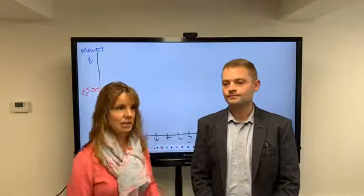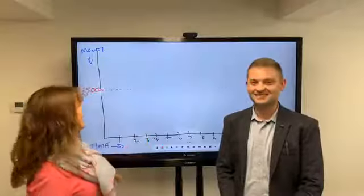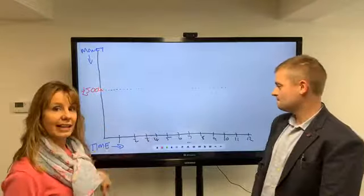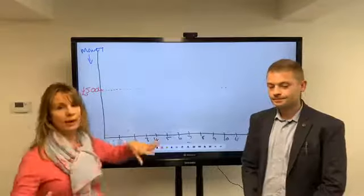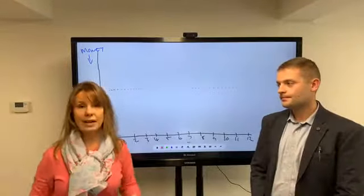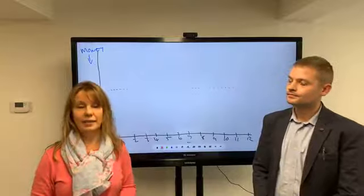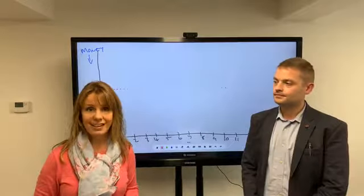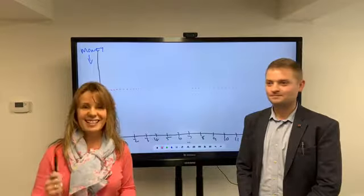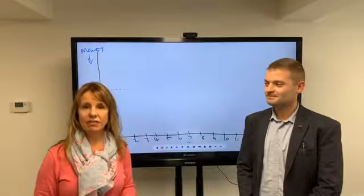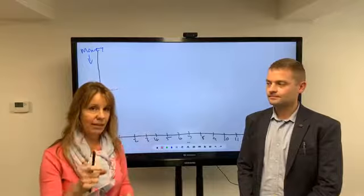There are certain things that we see, certain triggers that happen when people choose maybe the wrong asking price versus the right asking price. We've got our lovely TV here. Here's one we made earlier. What you can see here is this is the money that you're going to get for your house, and this is the timeframe on the market. If we come around and say to you we would recommend that you went on the market at £500,000 and we give you all the reasons why, and you believe us and you go on the market at £500,000.